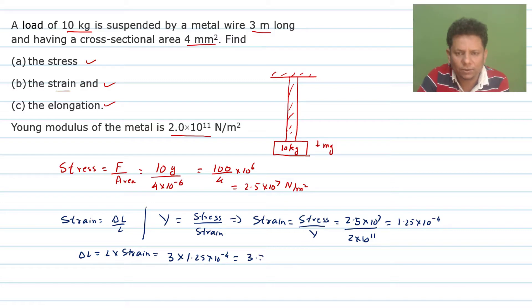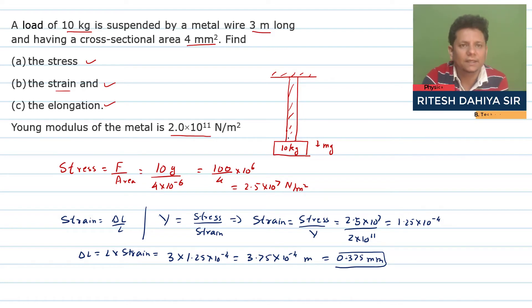So this will be equal to 3.75 × 10⁻⁴. If you write this in mm, then we can say 0.375 mm. So 10 kg load on the wire, you can get 0.375 mm extension in this wire. That will be our final answer.